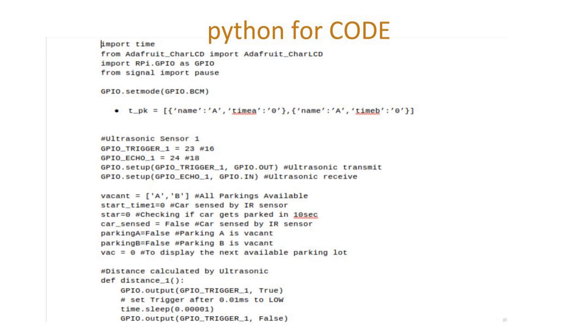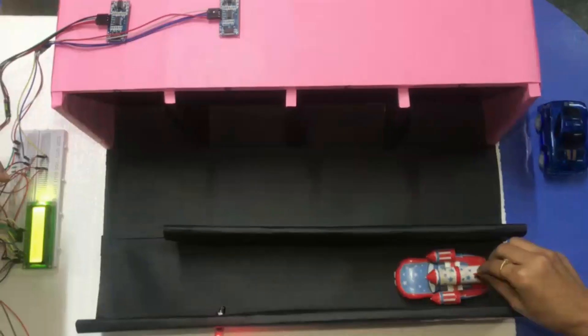Now let's discuss the coding and working aspect of our model. For coding, we have used Python language and the logic can differ depending on your model. For our logic, we have maintained a vacant list which we shuffle every time a car enters the parking so that we can provide the user with the nearest available parking.